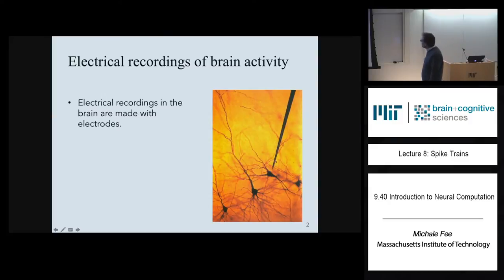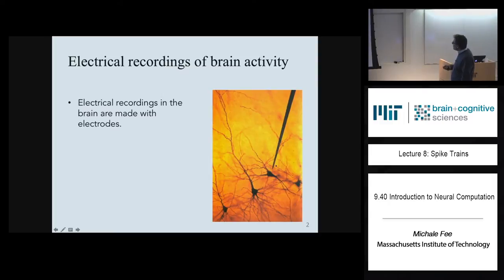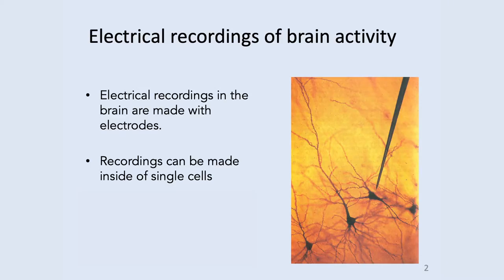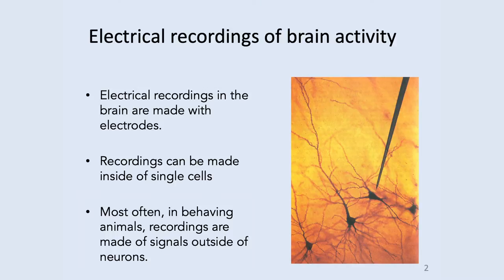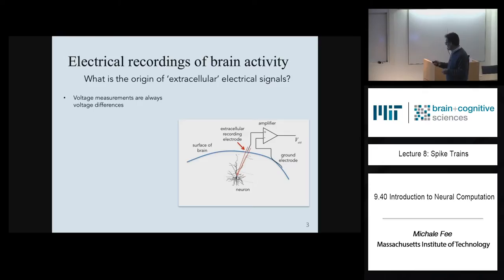Those kinds of recordings are made by placing metal electrodes that are insulated everywhere along the shank of the electrode, except right near the tip. If we place a metal electrode in the brain, we can record voltage changes right near cells of interest. We can record from action potentials of individual neurons in behaving animals and various aspects of either sensory stimuli or behavior. This kind of recording is called extracellular recording.